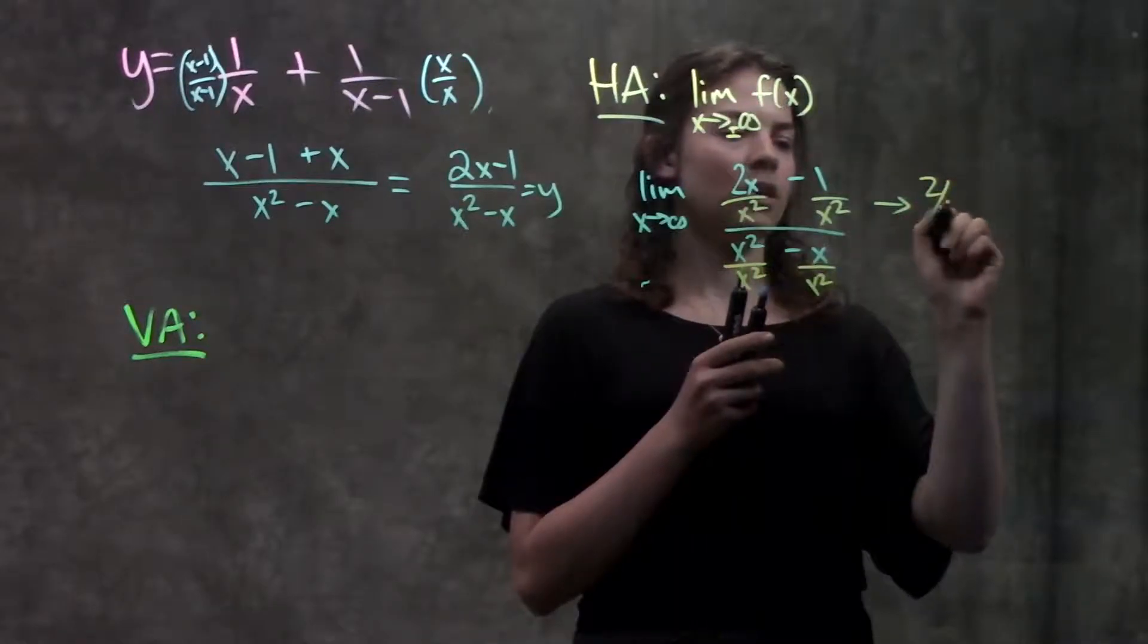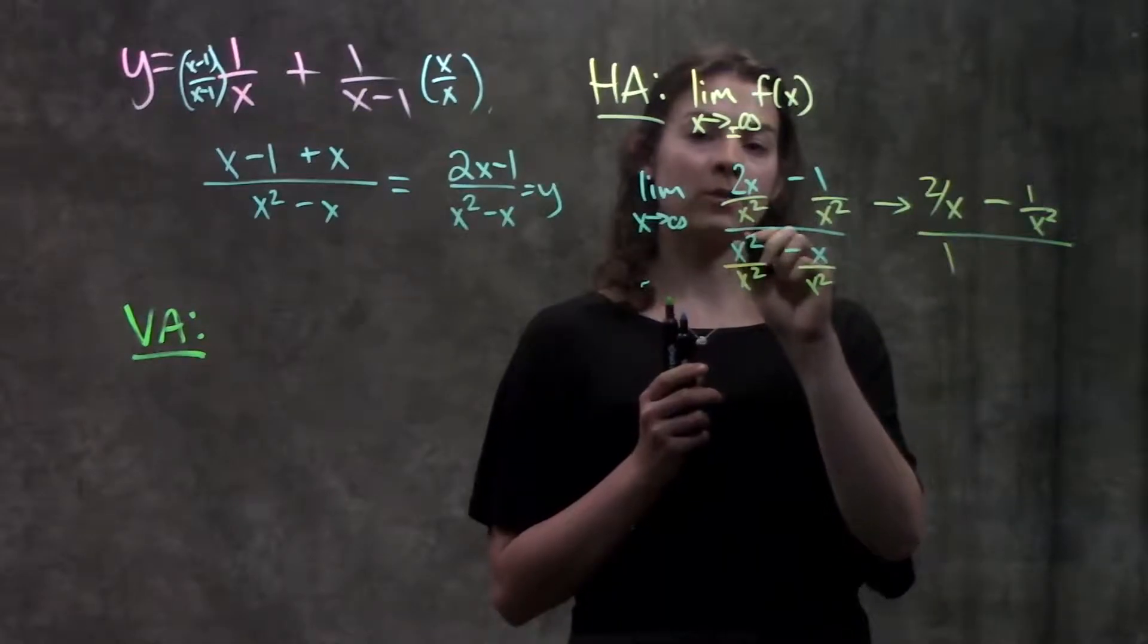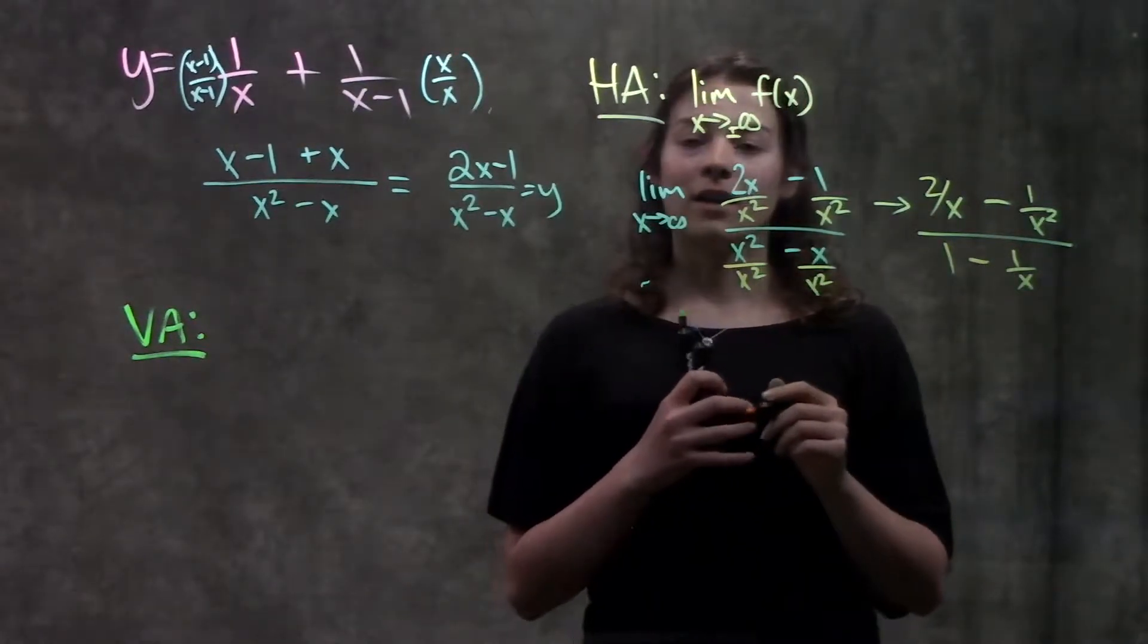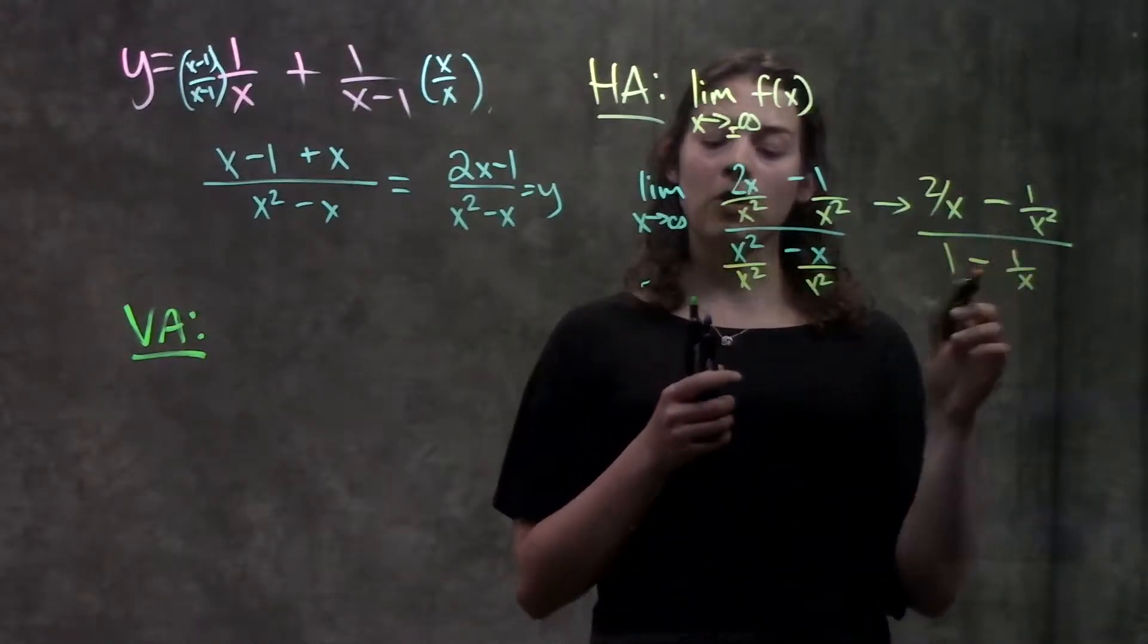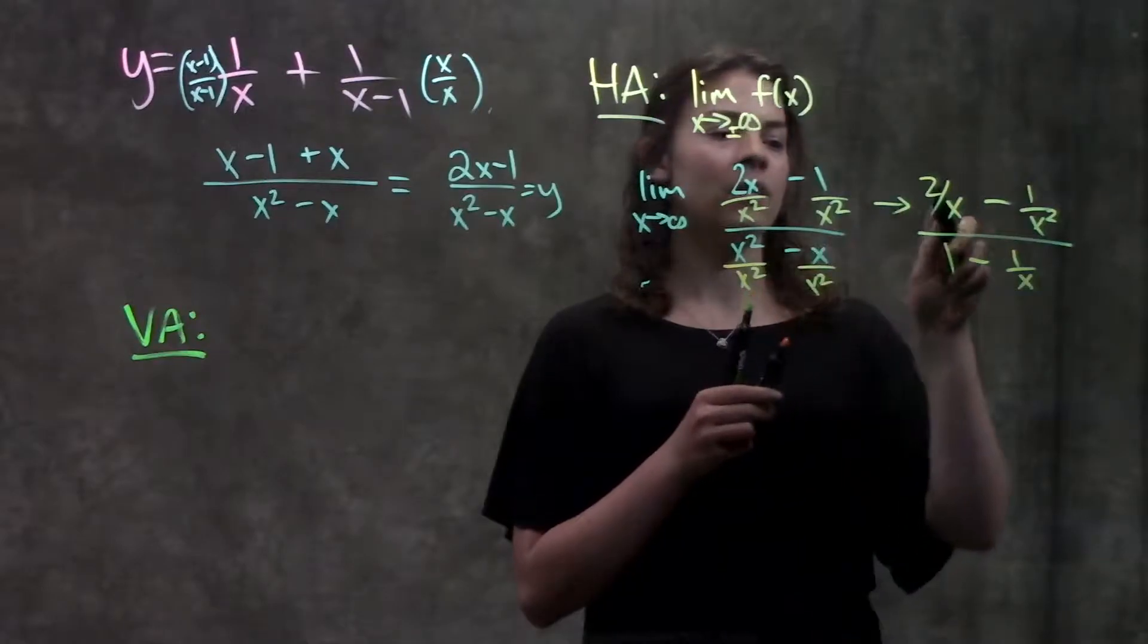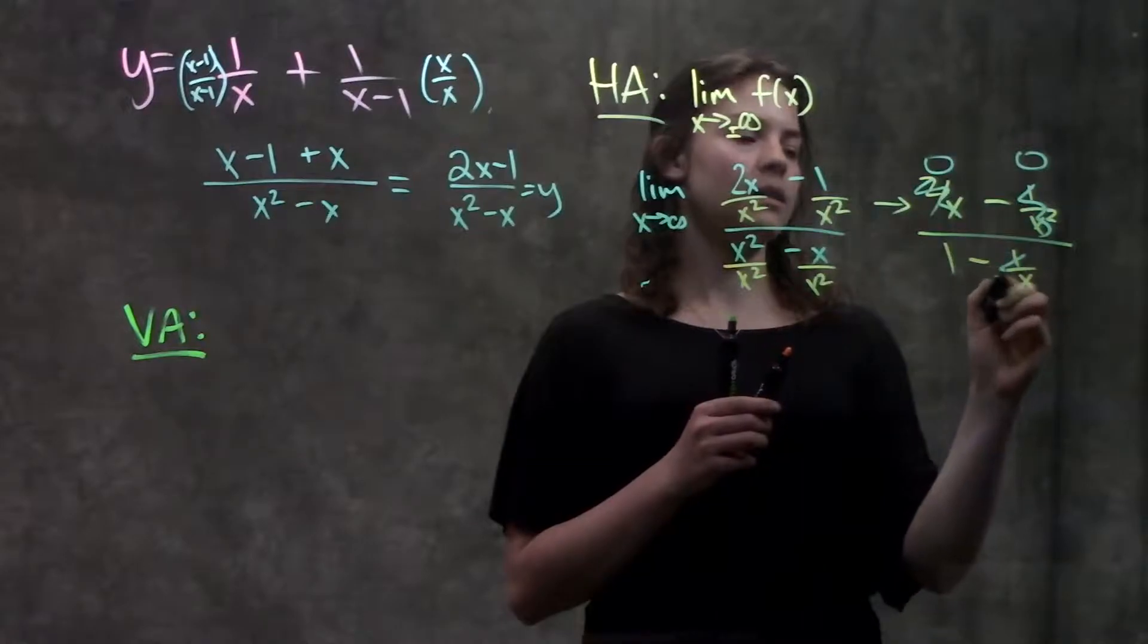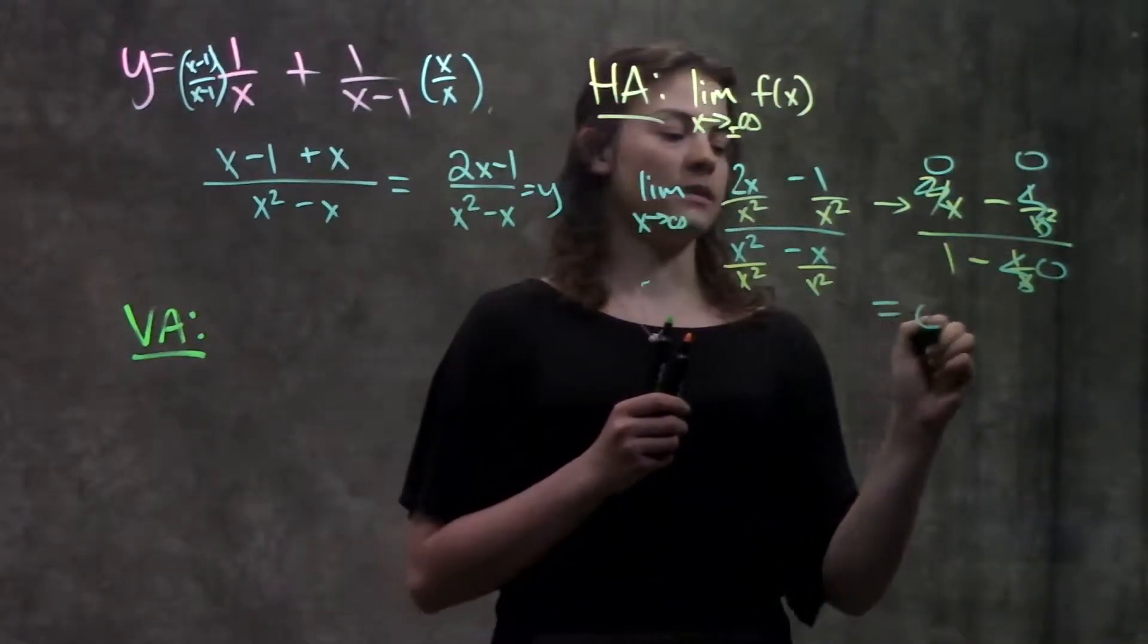So I'll have 2 over x minus 1 over x squared over x squared over x squared is 1 minus 1 over x. Okay and remember when we have the limit as x approaches infinity any number over x we can just cross that out. That becomes 0. So on the top I have 0 minus 0 over 1 minus 0. This will leave me with just 0.